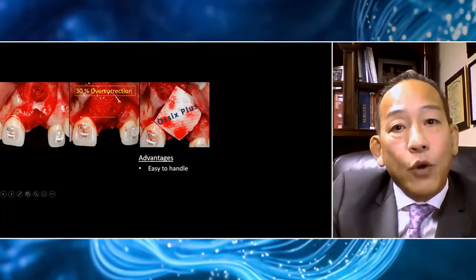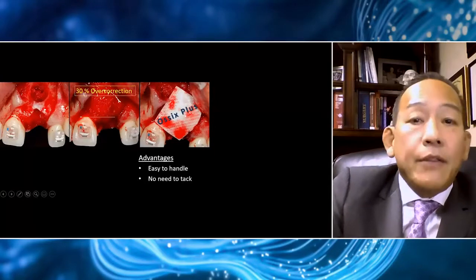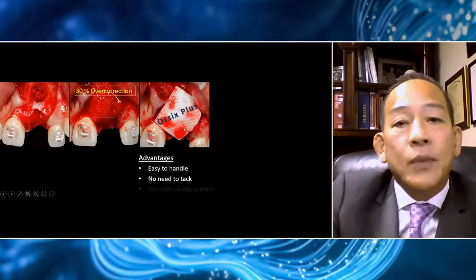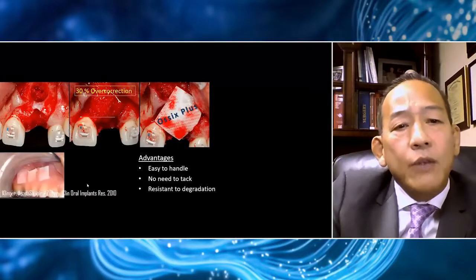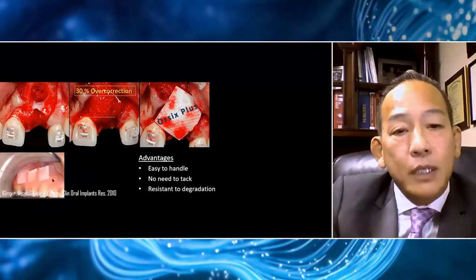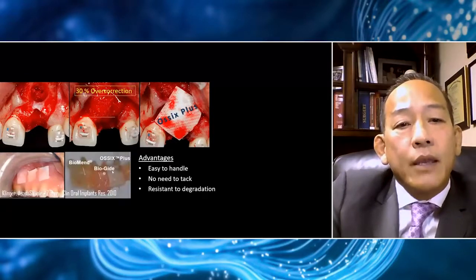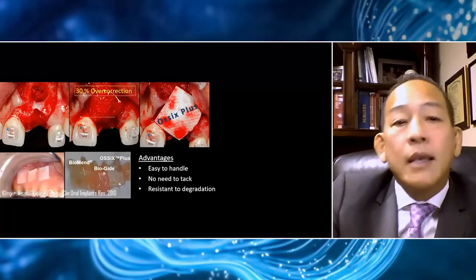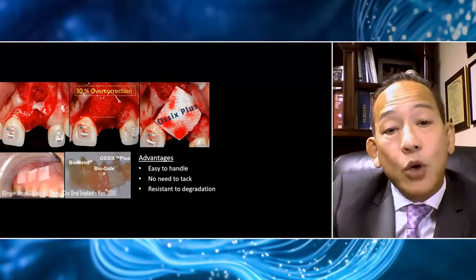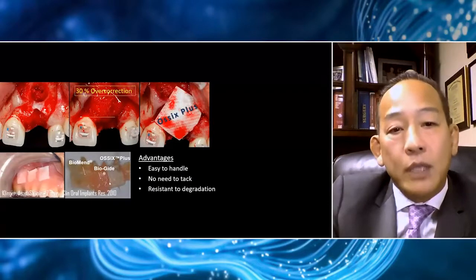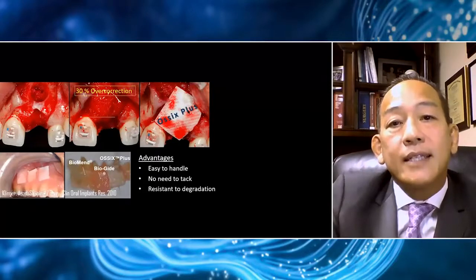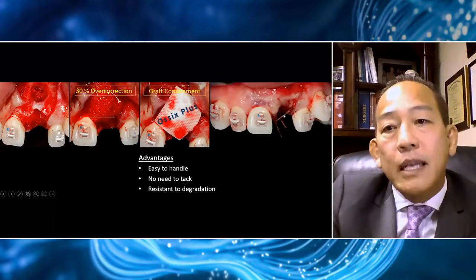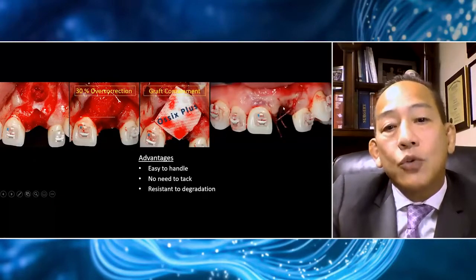I place the membrane over the graft without tacking. Due to its cross-linking technology, the membrane is more resistant to degradation. In a study published by Klinger in 2010, three membranes were intentionally left exposed. Between the BioGuide, the Biomend, and the Ossix Plus, after 10 days only one membrane was still remaining — the Ossix Plus. One disadvantage of some membranes left exposed is infection and incompatibility with soft tissue healing. What I've found over many years is that Ossix Plus is extremely biocompatible for soft tissue healing. This is important because I'm going to purposely leave a small area of this exposed to encourage tissue to form into this area.